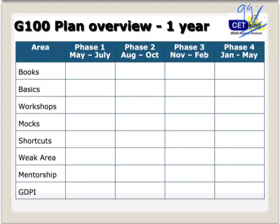So first of all, let's talk about the phases. Phase 1 is May to July, Phase 2 is August to October, Phase 3 is November to February, and Phase 4 is January to May. Phase 1 we are only going to work on basics. Phase 2 we'll talk about CAT and CMAT exams. Phase 3 we're going to talk about other exams like NARSEE MONJEE, Symbiosis, and XAT. The last phase is the GDPI phase.